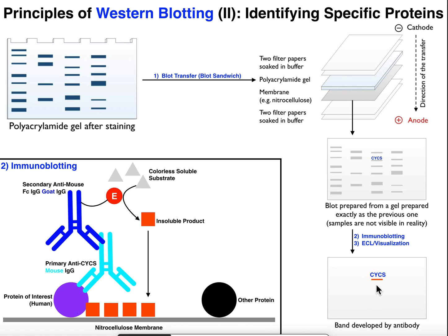To conclude: there are other applications of this same antibody-based setup, such as immunofluorescence and ELISA. Both of those processes have slightly different applications, but they are very similar to a Western blot at least in this immunoblotting part. Keep this general process in mind because we'll see it again in immunofluorescence and ELISA. Hopefully this video made sense.